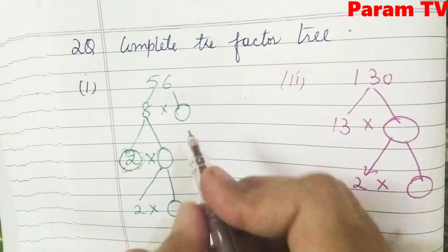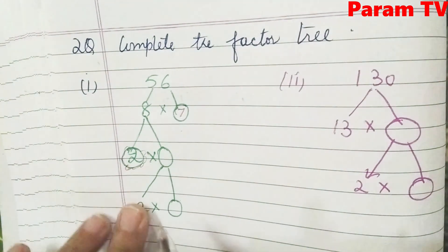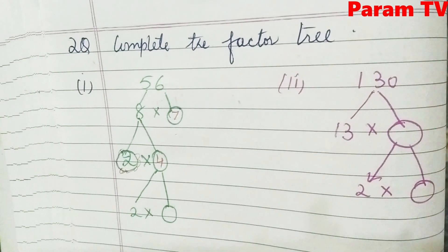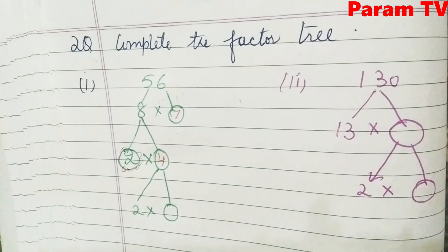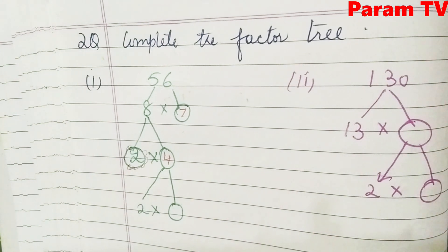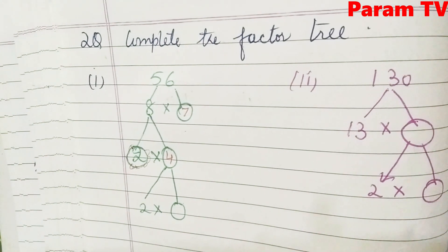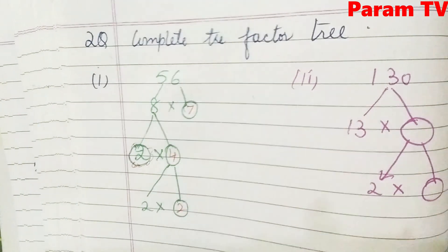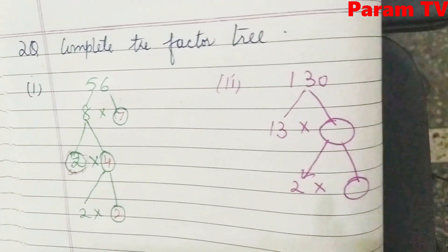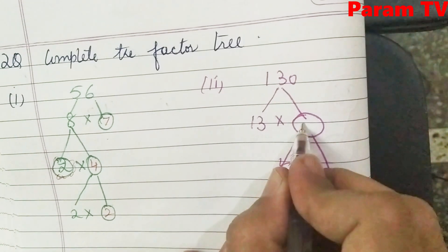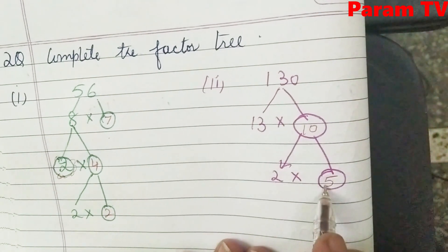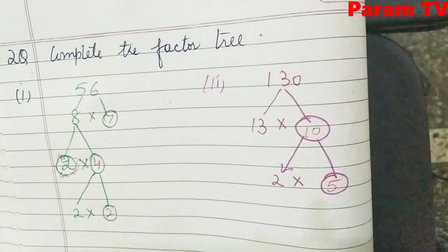Here is 8 — 7 eights are 56. Now for 8: 2 fours are 8. This has been built in a haphazard way. When you build a factor tree yourself, build it exactly the same way as I explained in the last question. 2 twos are 4. So here we have completed the tree. Here also: 13 into 10 — 13 tens are 130. Then 2 and 5.